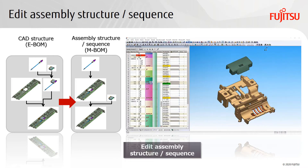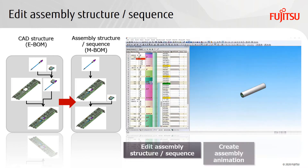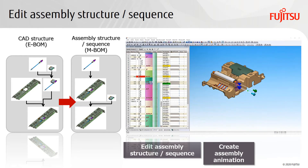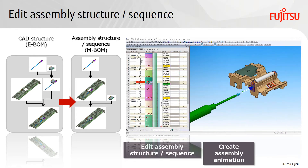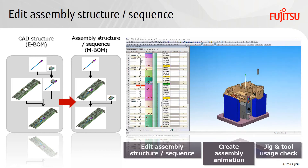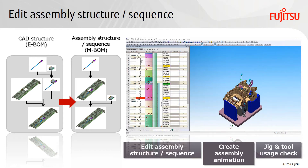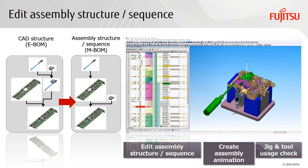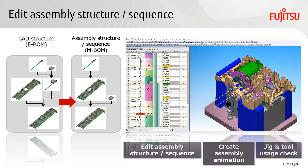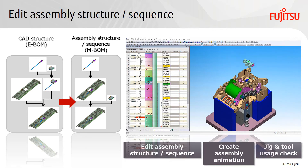An animation is generated when the changes to the assembly procedure are complete. Jigs and tools can also be displayed during the animation. Interference between parts in the assembly route and with jigs and tools can also be checked, so assembly availability can be verified.